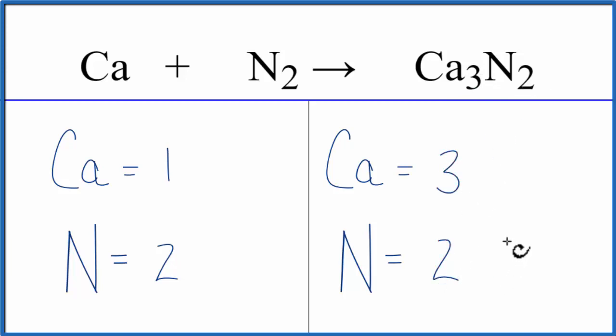It looks like this equation's almost balanced. We have two nitrogens on each side, and then we have three calciums here and just one here. So all we can do when we balance chemical equations is change the coefficients, the numbers in front of them. We can't change these subscripts here.